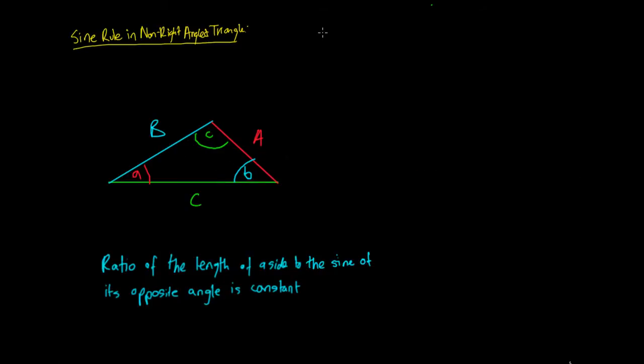So the rule says if we were to take the ratio of a length of a side, so side A, to the sine of its opposite angle, so the angle opposite side A is going to be this A here, that would be constant.